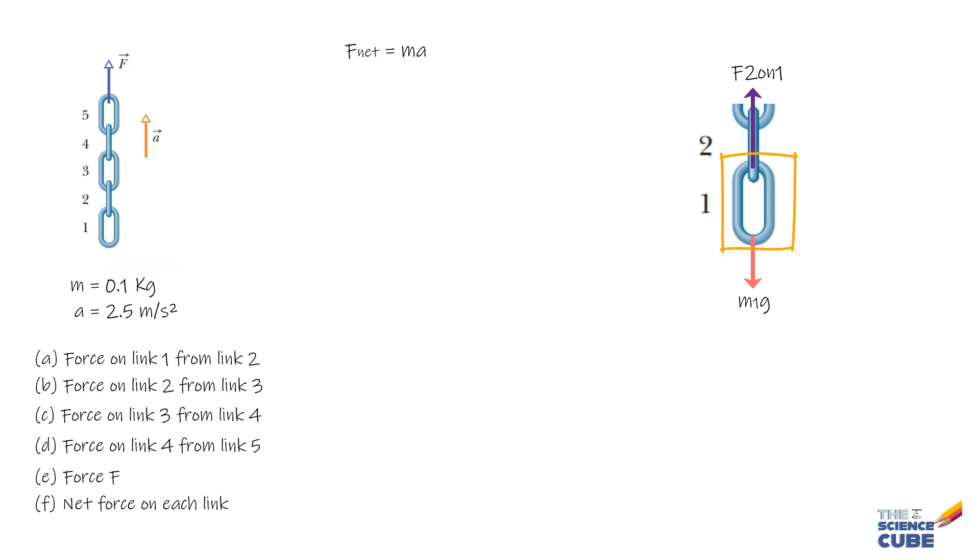There are only two forces acting on link 1. If we write Newton's second law of motion for link 1, following this sign notation, we get the net force: F2 on 1 minus M1G equals M1A, where A is the acceleration of the chain and also the acceleration of M1, since M1 and the chain are moving together.